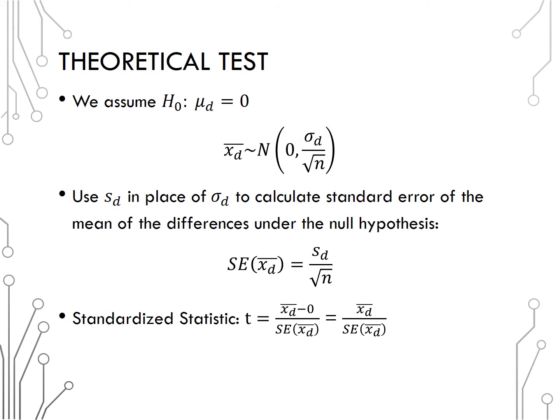If we are to assume that the null hypothesis is true, in other words that mu d is equal to zero, we can simplify the distribution on the previous slide to saying that the sampling distribution of many mean differences will be approximately normal centered at zero, with standard deviation sigma sub d over the square root of n.